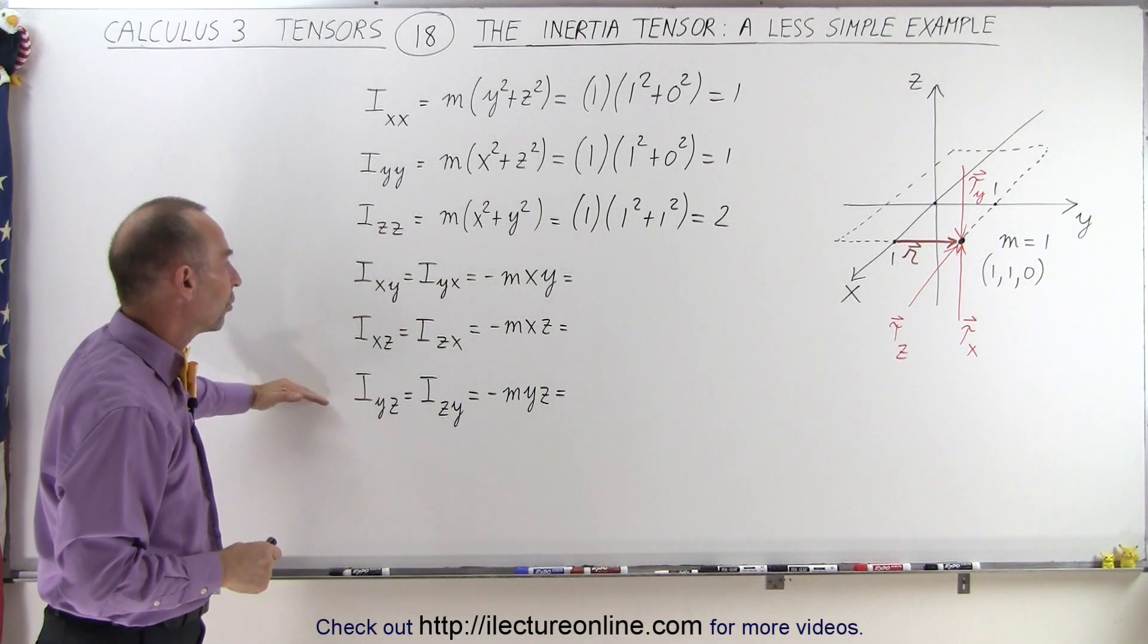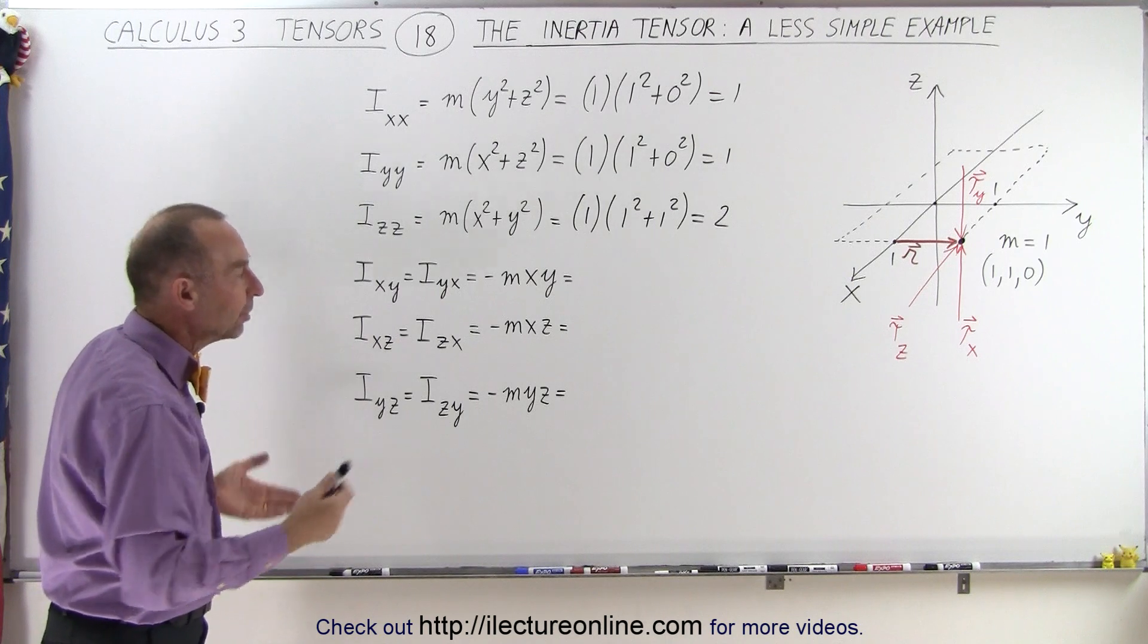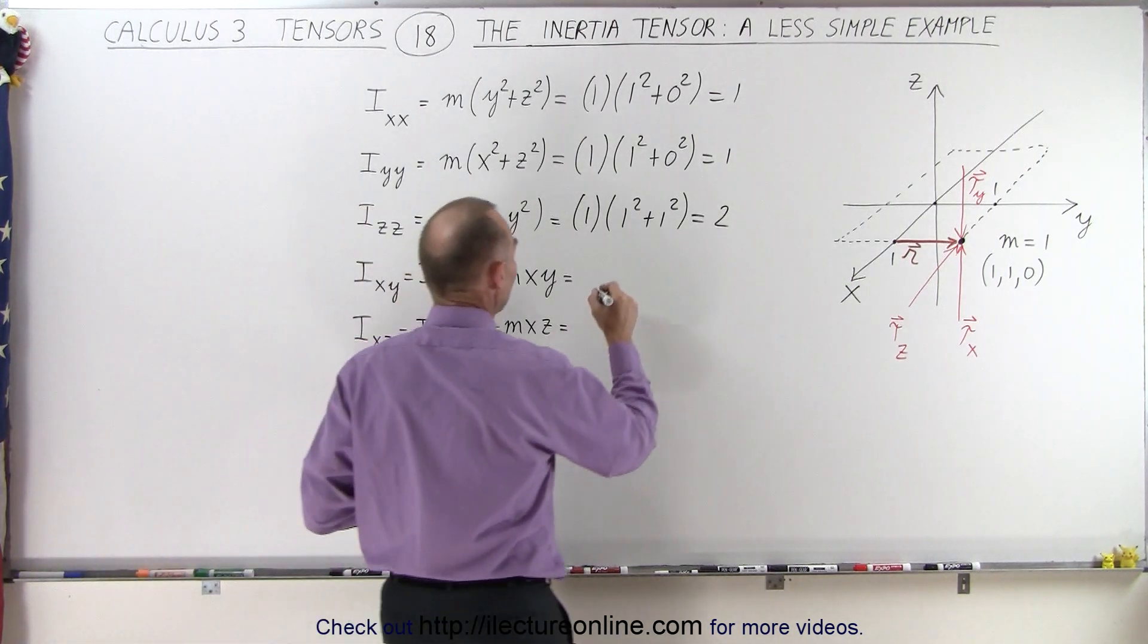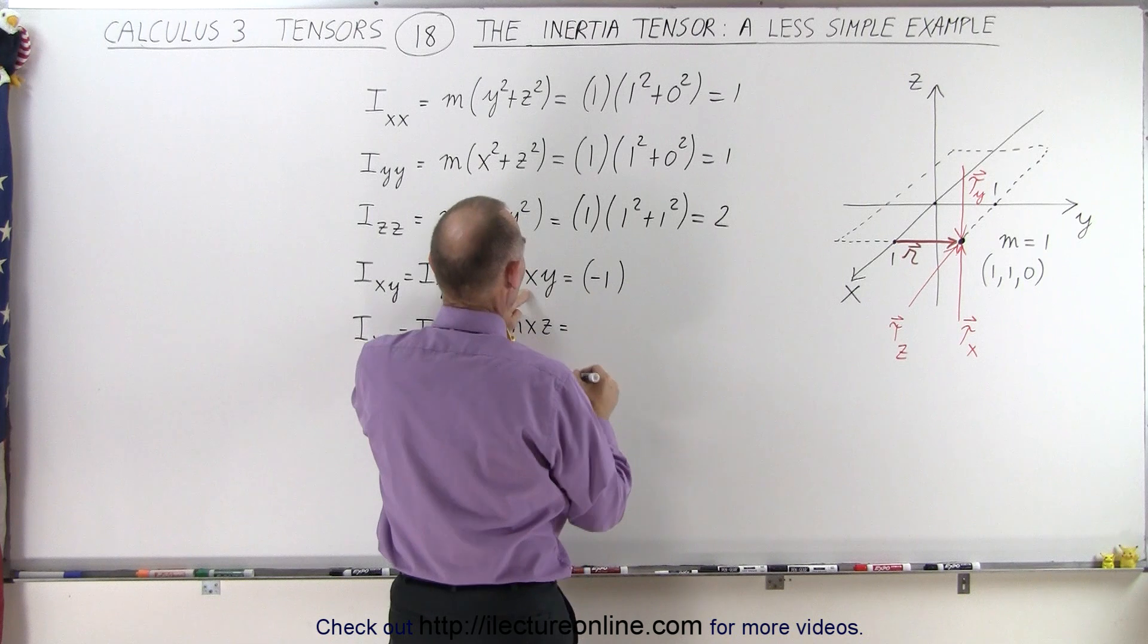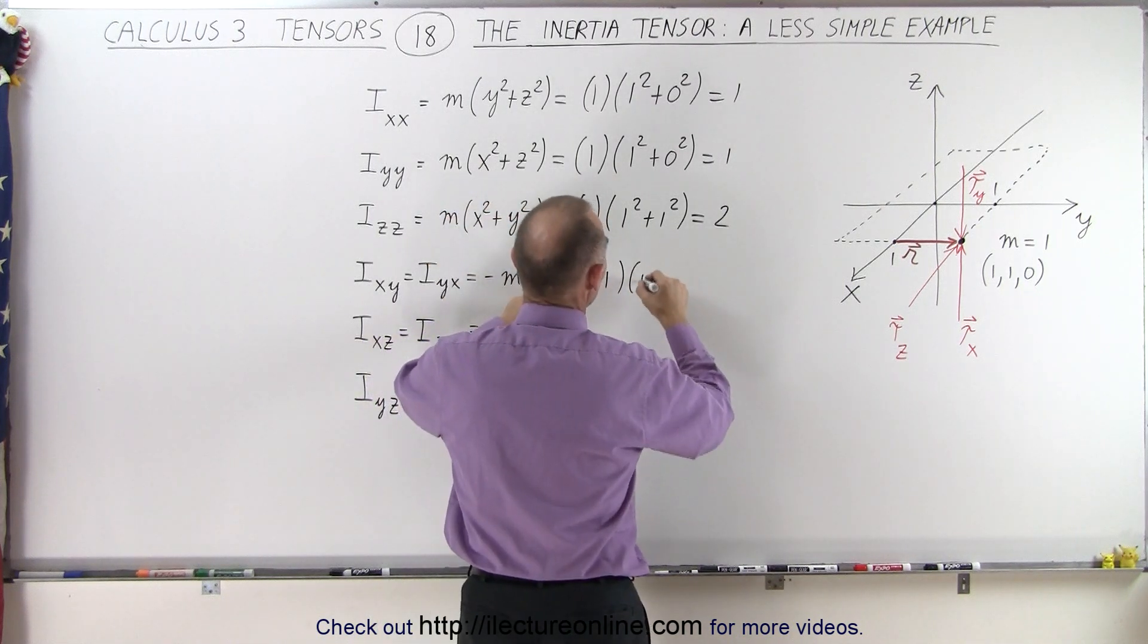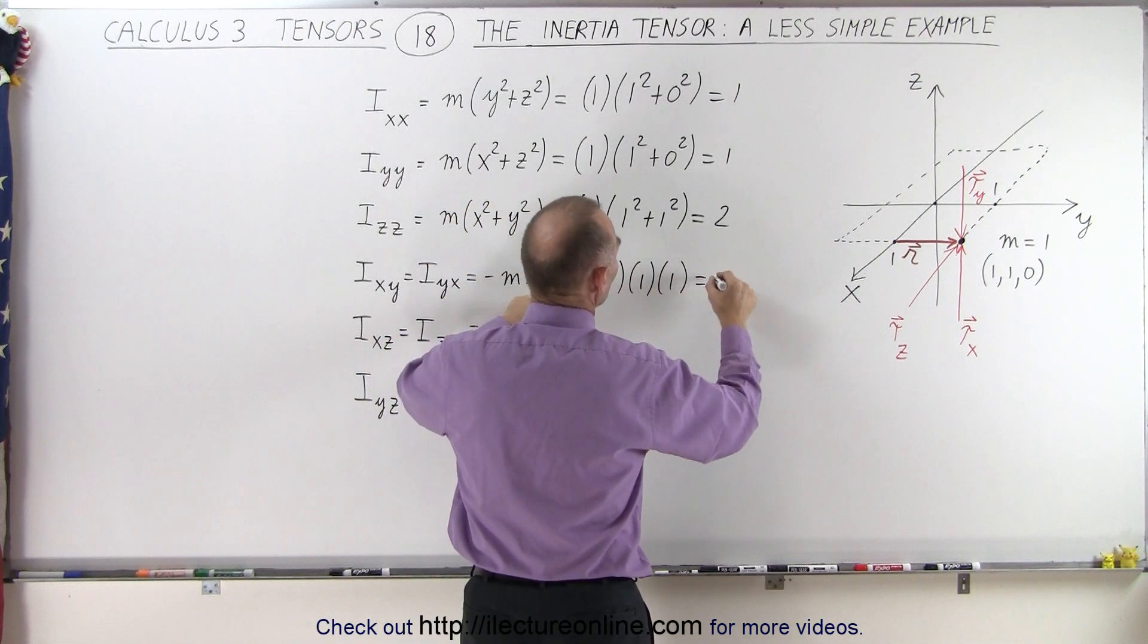And then we have these cross-elements, or off-diagonal elements, let's see what those are equal to. So in this case, we have a minus 1 times x times y, which would be times 1 times 1, which is a minus 1. So there you have it.